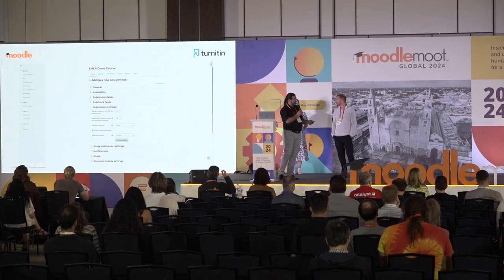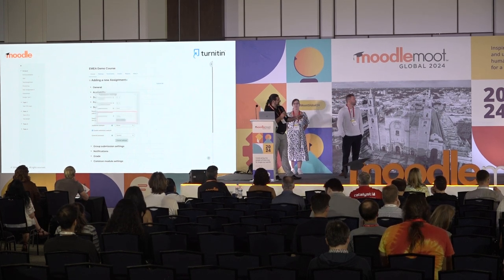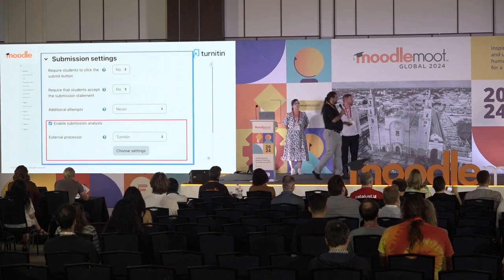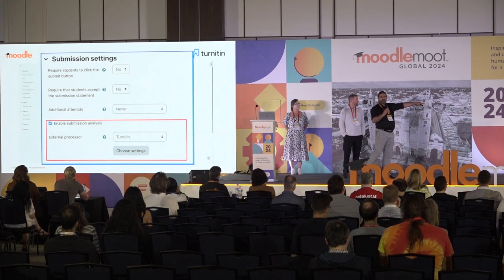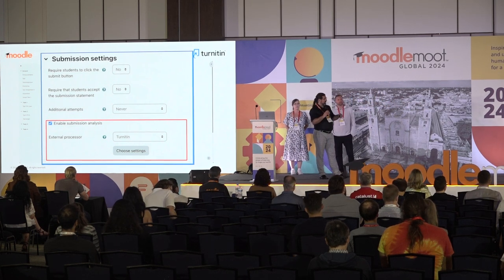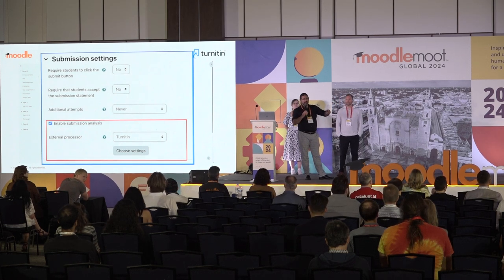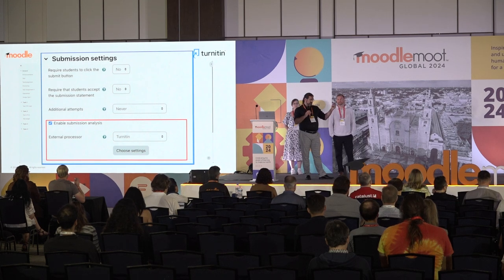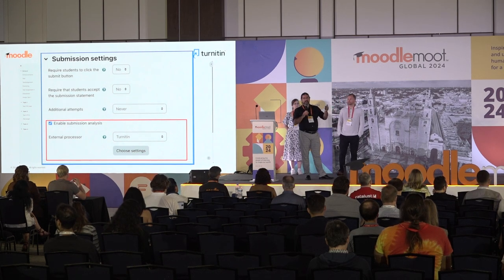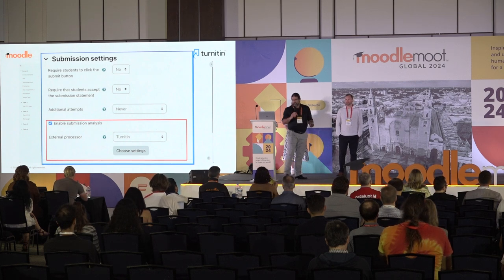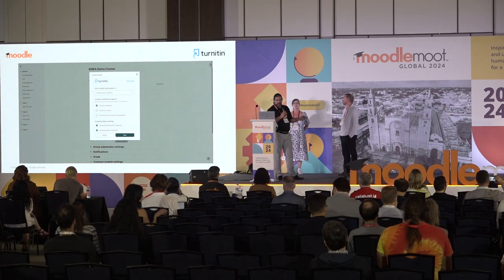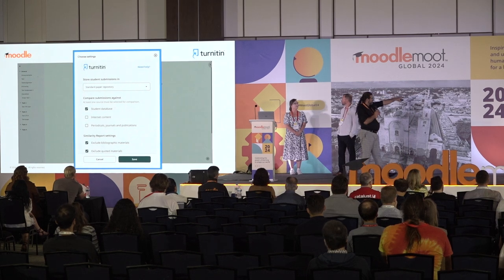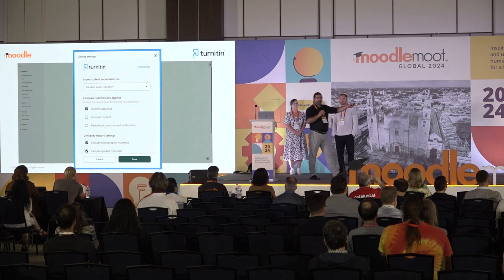This is what the Asset Processor will look like in an assignment page. When configuring their assignment, instructors can enable submission analysis and select an external processor — Turnitin is shown here, but you can have multiple asset processors attached in your system. For example, one assignment might need a similarity report, while another with student video submissions might need translation or closed captioning. This is much more broadly applicable than just plagiarism — it applies to any sort of file processing you'd want to do.